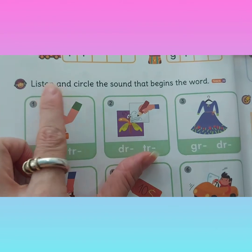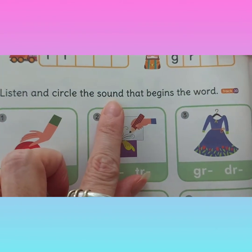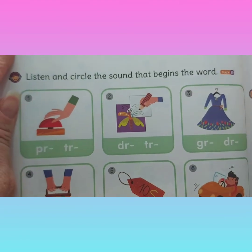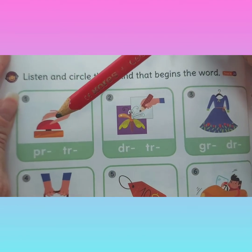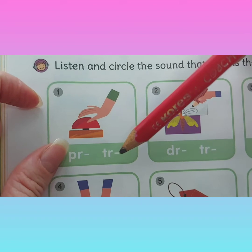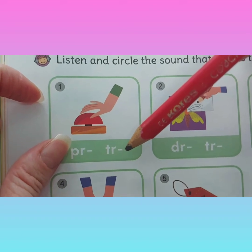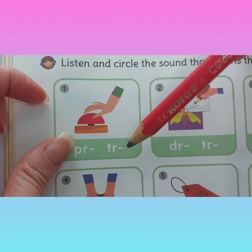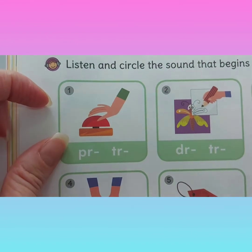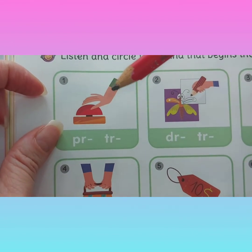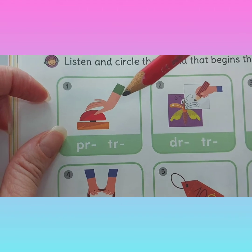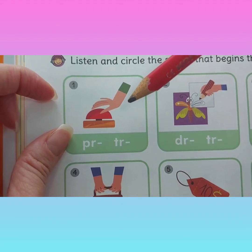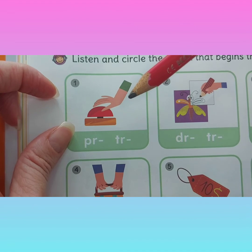Listen and circle the sound that begins the word. In this exercise we have to look at the picture, then look at the two different beginning sounds of the word, and circle the correct beginning sound. Picture number one: press. P-R makes the sound pr — press.